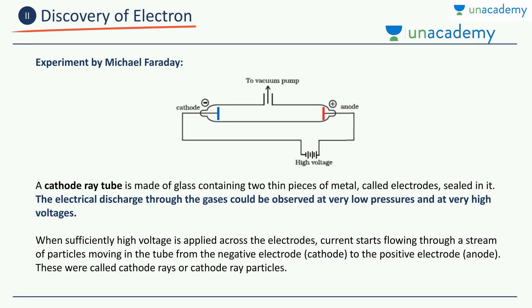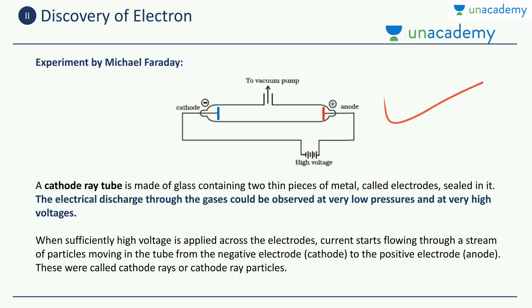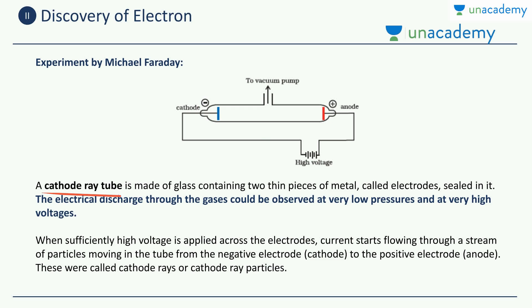Let us study about the first subatomic particle: the electron. We will look at the experiment conducted by Mr. Michael Faraday. He was a very good scientist and a lot of his work resulted in the discovery of the electron. This experiment includes a cathode ray tube. This tube, as you can see, is made up of glass and it contains two thin pieces of metals—the blue and the red—which are known as electrodes.